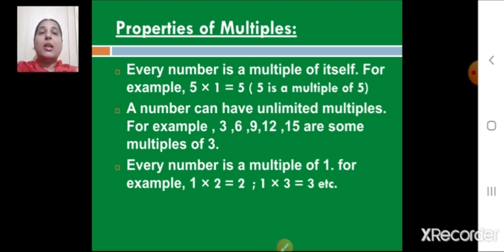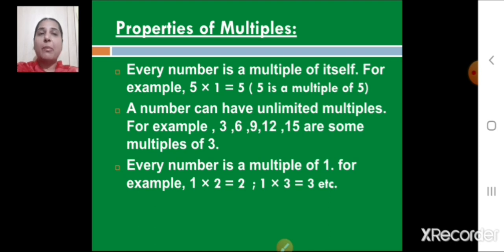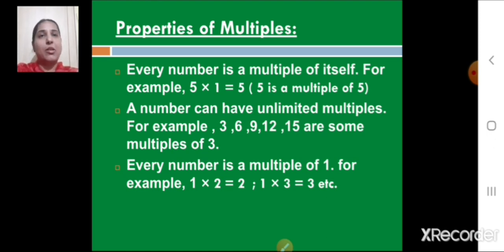The second property is: a number can have unlimited multiples. For example, 3, 6, 9, 12, and 15 are some multiples of 3, but you can multiply 3 by any other counting number to get more multiples. So a number can have unlimited multiples.